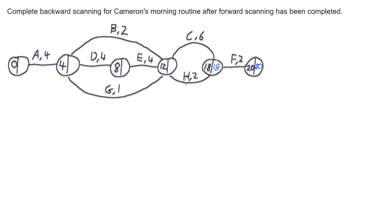It gets a bit different when we have multiple paths. When multiple paths come into a single node, I write my solution on the arc and then work out which value to put in the node. Looking at H: H takes 2 minutes, so 18 take 2 gives me 16. Looking at C: 18 take 6 gives me 12. I pick the smallest of these two, because the smallest represents the latest I can start for both paths. Picking the smallest value means that when I finish, I'm going to finish still on time, because it's the longest activity that creates this constraint.